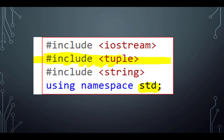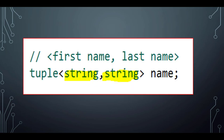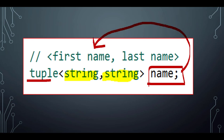Here's an example. First, pull in the library — the tuple header — and use namespace std so I don't have to type 'std::'. Next, I'm going to create a variable called 'name' and make it a tuple. In my mind it's going to have a first name and a last name, both strings. So I'll say tuple<string, string>.